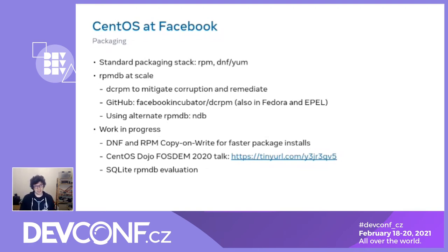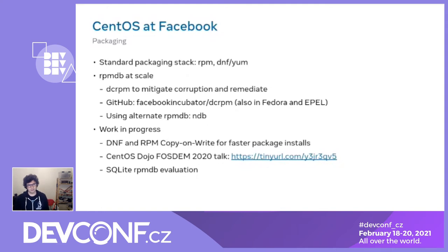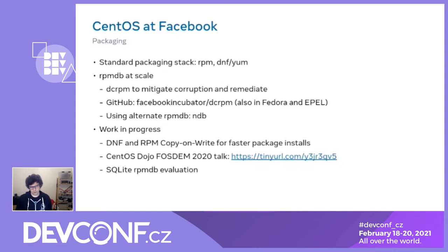With the rpmdb specifically, this was very evident when we were still using Berkeley DB because it was fairly brittle and easy to mess up. We wrote a toolset called dcrpm to deal with this — to identify the state of the rpmdb, remediate corruption, and do housekeeping around it. This is also open source and packaged in Fedora. We also worked with the community, which had already developed alternative RPM databases. We AB-tested lmdb and ndb by deploying them on a lot of machines, and ended up switching to ndb, which all but eliminated rpmdb corruption.